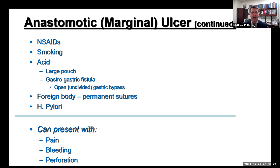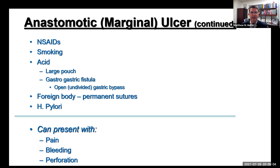NSAIDs are a big cause and taking a thorough history of NSAID use is very important. Smoking is one of the biggest factors in creating these ulcers. If people are smokers and quit just for the operation, I generally don't offer them a Roux-en-Y gastric bypass because the risk of ulceration is real. Acid plays a role: if you leave a large pouch you leave some acid-producing cells behind. Gastro-gastric fistulas—more common in open, undivided bypasses—can also deliver acid. Permanent sutures can be a nidus for ulcers, which is why most of us switched to absorbable sutures. H. pylori can play a role as well. Patients present with pain, bleeding, and perforation.